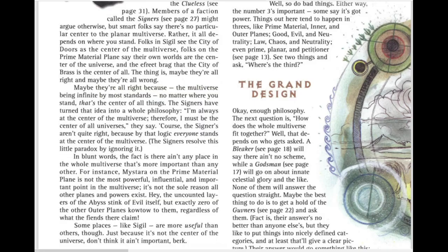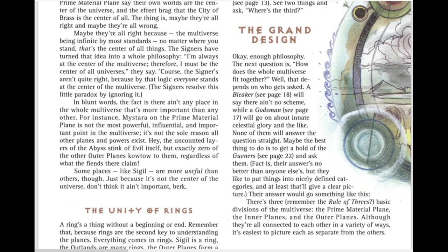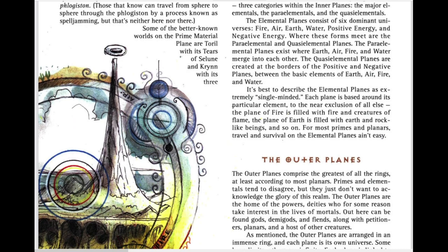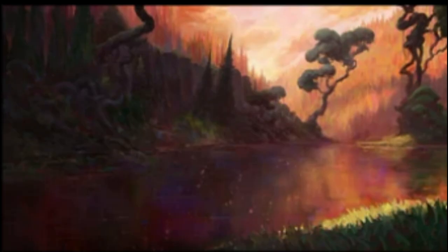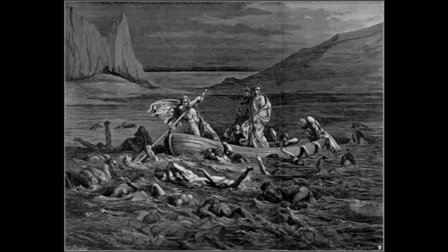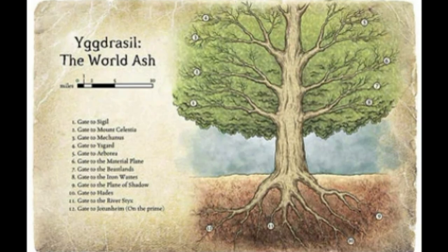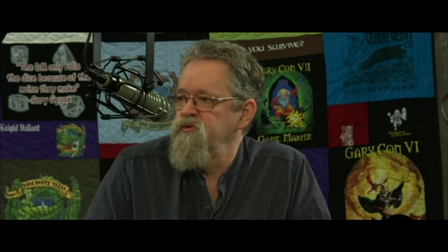Planescape offered new details on the inner planes of air, earth, fire and water, and the paraelemental and quasi-elemental planes, as well as the positive and negative material planes. Planescape also explored the unique paths that allow adventurers to traverse between the planes. These paths included the River Oceanus and Styx, Tree Yggdrasil, and Mount Olympus.